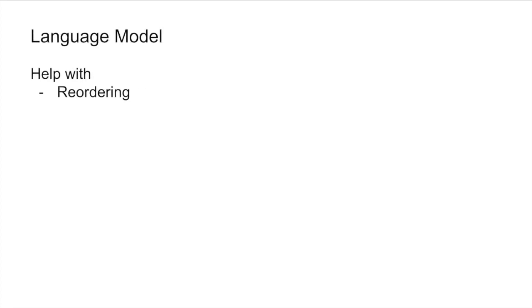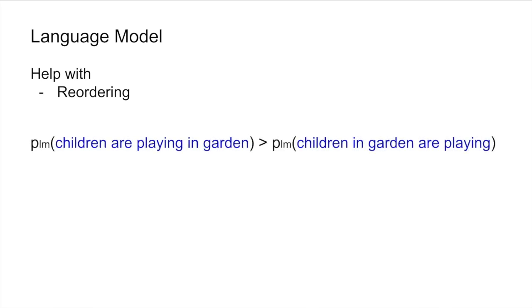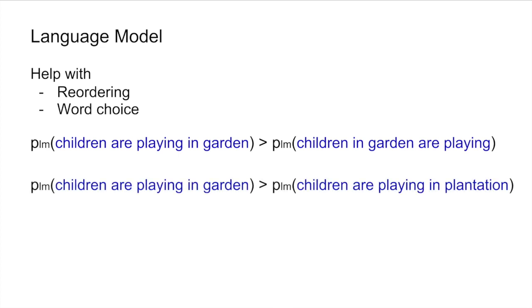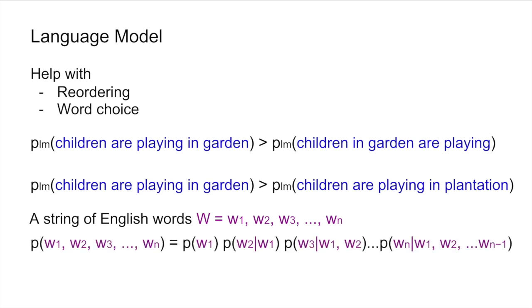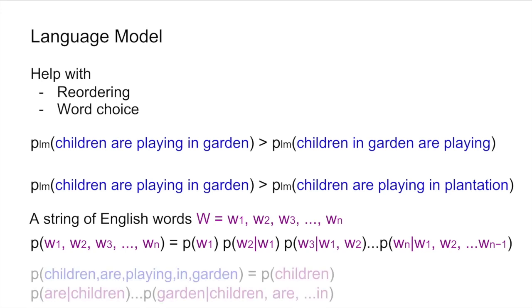The language model helps in reordering the sentence. For example, 'children are playing in garden' will have higher probability than 'children in garden are playing.' It also handles word choice — 'children are playing in garden' will have higher probability than 'children are playing in plantation,' because 'bagiiche' could be either 'garden' or 'plantation' depending on context. This probability is calculated using Bayes' theorem — given words W1 to WN, we apply chain rules and Bayes' theorem to compute it.